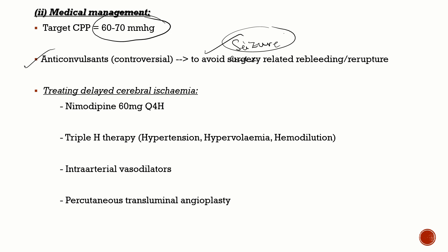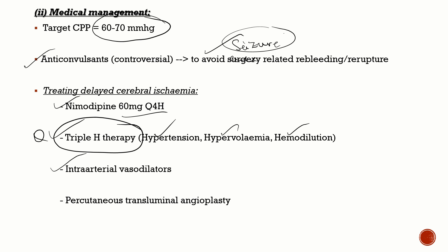For delayed cerebral ischemia due to vasospasm, the drug of choice is nimodipine — a calcium channel blocker — 60 mg given four-hourly. Triple H therapy is a very important concept: you increase the patient's BP with IV fluids and vasopressors, causing hypertension, hypervolemia, and hemodilution to open up the vasospasm. However, triple H therapy should not be attempted unless the aneurysm has been treated first; otherwise, the risk of re-bleed is very high. After coiling or clipping, you can proceed with triple H therapy. Intra-arterial vasodilators and percutaneous transluminal angioplasty can be used for severe vasospasm.